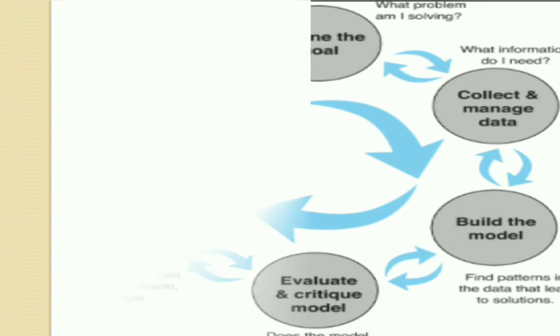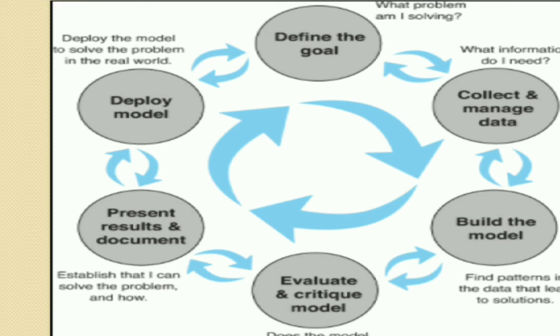This is the important topic in this video: Stages in data science project. Define the goal. In this first stage, you should think about what problem am I solving? Collect and manage data. You must think about what information do you need. And build the model. You have to find patterns in the data that leads to solution.